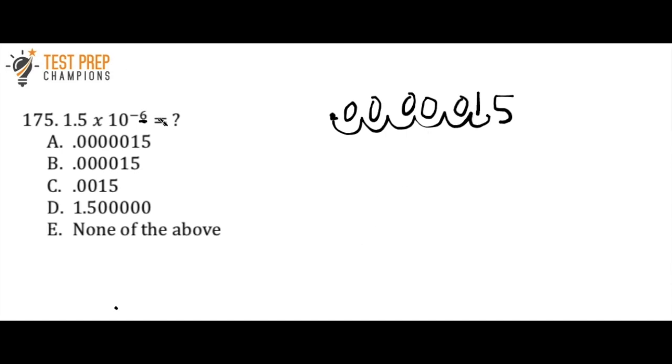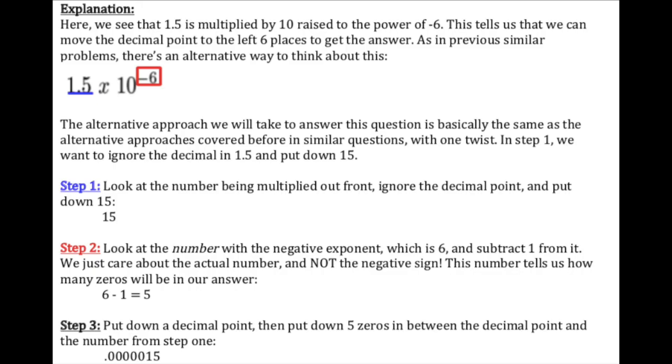Now the other way to do it would be to just look at the 6 here and subtract 1 which would be 5. I'm going to put my decimal and I'm going to just put five zeros. 1, 2, 3, 4, 5, and then just write the 1 and the 5. So two different ways to do this. It's up to you to decide which way is easier for you to remember. But A is the correct answer here. And I'm going to let you pause the video and you can take all the time you need to study the written solution if you want to. And if not, that's fine too. Whenever you're ready, we'll go on to the next question.